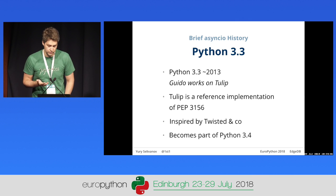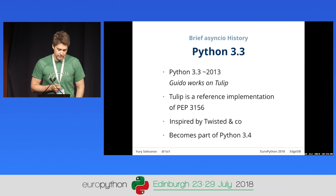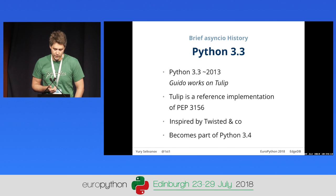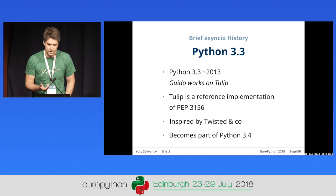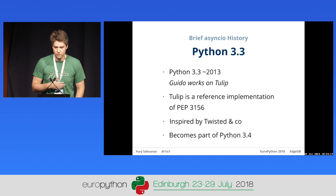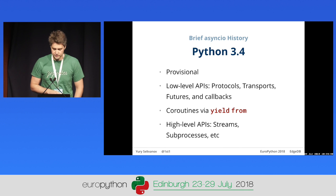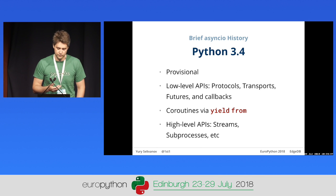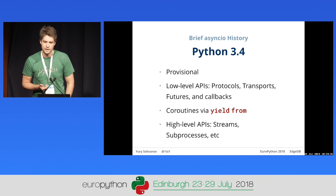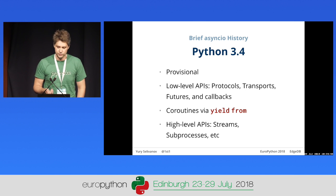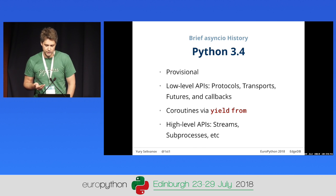Those frameworks — Gevent, Eventlet, and libraries like Twisted and Tornado — were pretty popular back then, and they significantly influenced AsyncIO. For instance, transports, protocols, and callbacks all kind of came from Twisted. But it was obvious we didn't want to take the Gevent approach — we wanted things to be explicit. So in Python 3.4, AsyncIO landed as part of the standard library. It was more provisional, meaning we could push new features in bug fix releases and could even break things, though we didn't really do that.